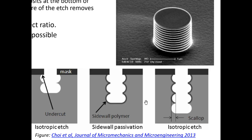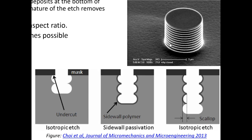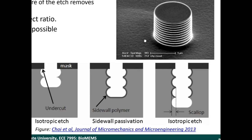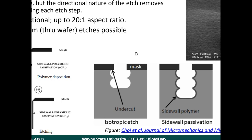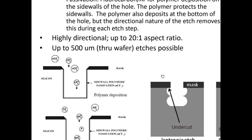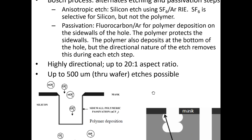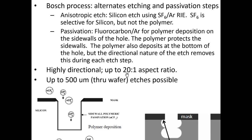You do get an effect called scalloping — little etched regions along the sidewalls — which can show up in structures made using deep RIE. But the scalloping can be controlled. This is a very popular process because you can make very high aspect ratio structures: 20 to 1 is common, and you can do even more with a very good deep RIE process. Using this process you can also drill through the entire wafer.